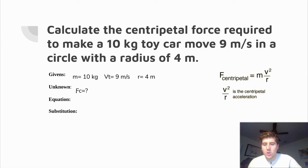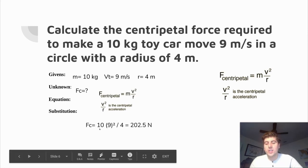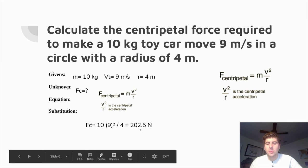So we use centripetal force equals mass times velocity squared divided by radius, then substitute our numbers: mass is 10, tangential velocity is 9 — squared — divided by 4. Once we plug that into our calculator, we get about 202.5 newtons.